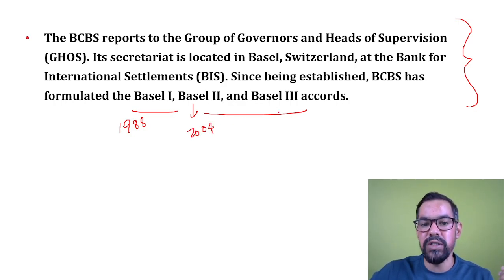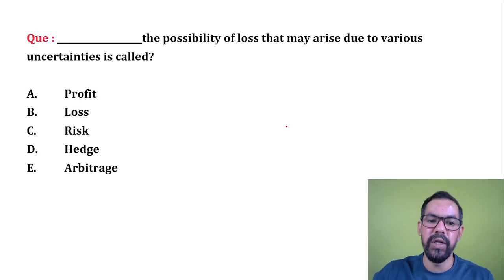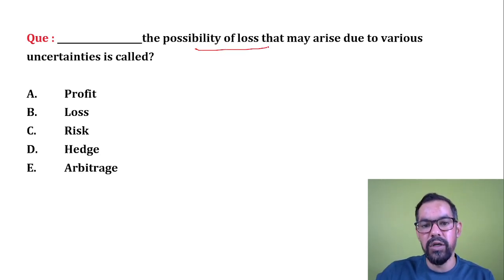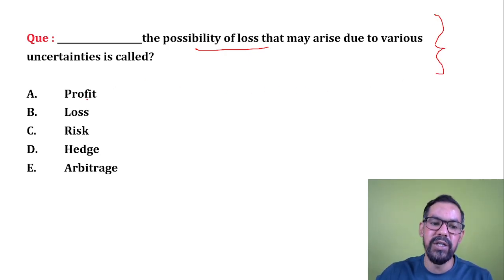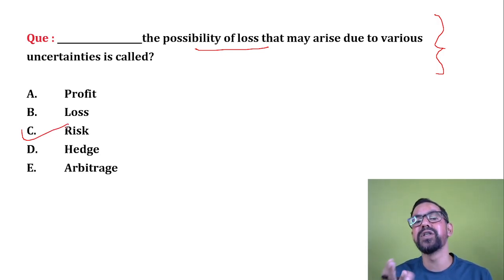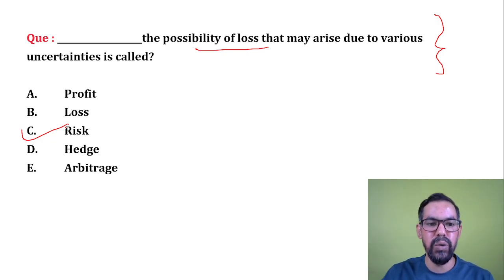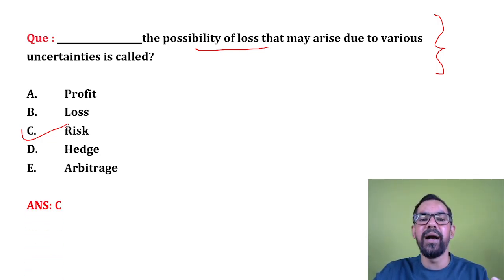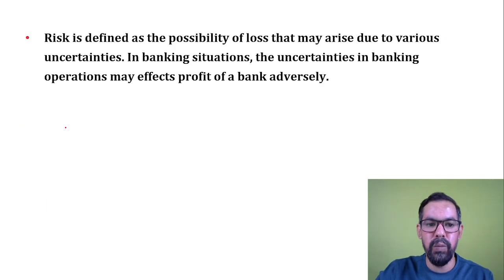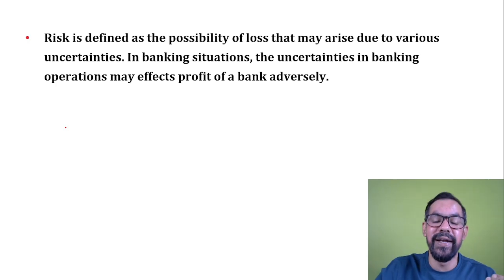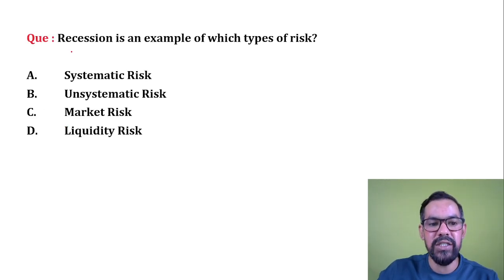Basel 1 was announced in 1988, Basel 2 was launched in 2004, and Basel 3 was announced in 2010, post the 2008 recession. Next question: the possibility of losses that may arise due to various uncertainties is called risk. In finance, risk is the possibility of financial losses in the future. Risk relates to profit/loss. Hedging is basically to minimize your risk. Arbitrage is buying in one market and selling in another.